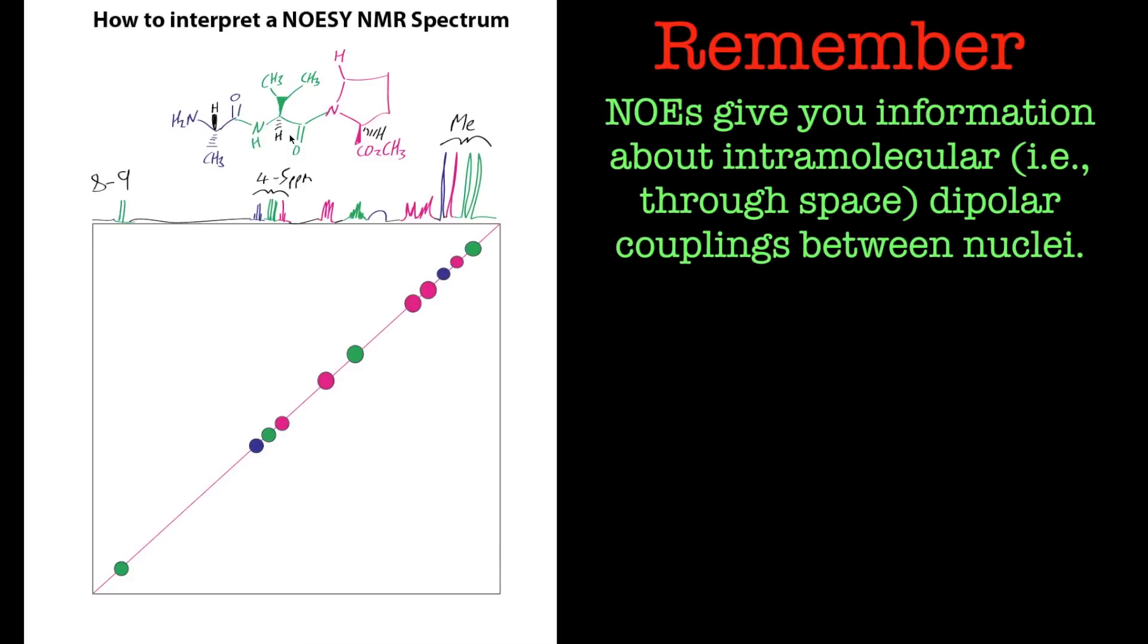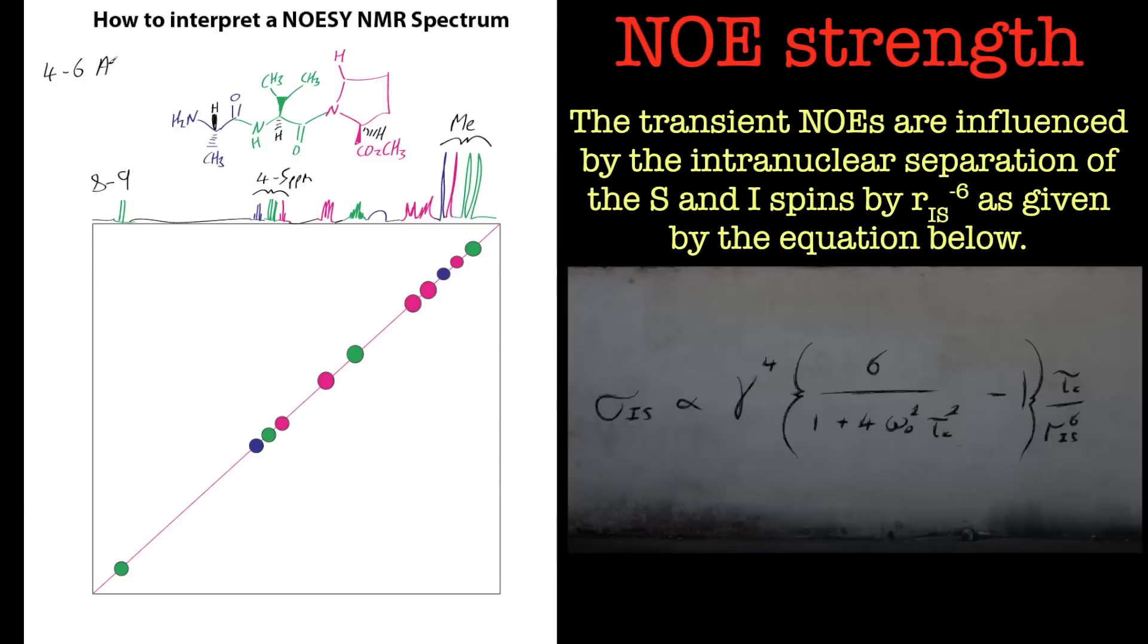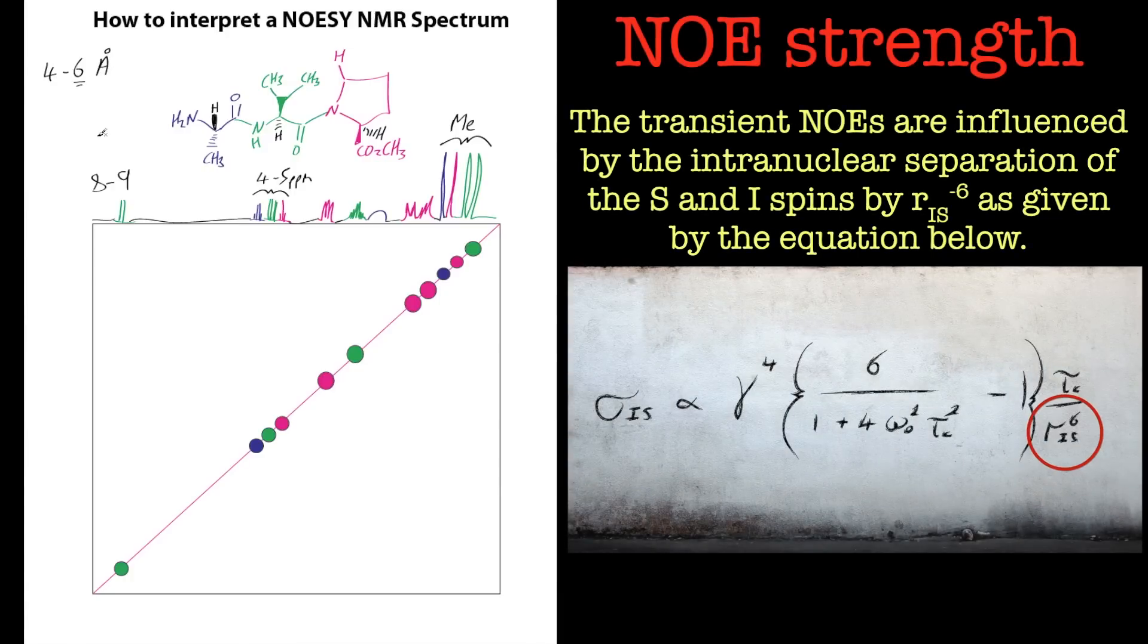These are called dipolar couplings through space. So these are through space couplings, and I'll put all this information up at the side. We're basically looking at something between four and six angstroms. That is verging on a very weak signal, but you're looking about four angstroms really, that's a good rule of thumb. If those protons, so you're looking at hydrogen to hydrogen interactions in the molecule, if they are about four to five angstroms near each other, then you should see an NOE.